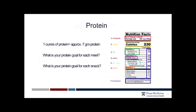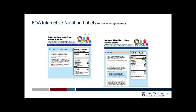Your protein goal for snacks is about 10 grams of protein. The FDA has an interactive nutrition label, which is excellent for additional explanation as to what food labels are trying to tell us. There is a link in the video description below on our YouTube channel — if you click on that link, you can access this FDA interactive Nutrition Facts Label.